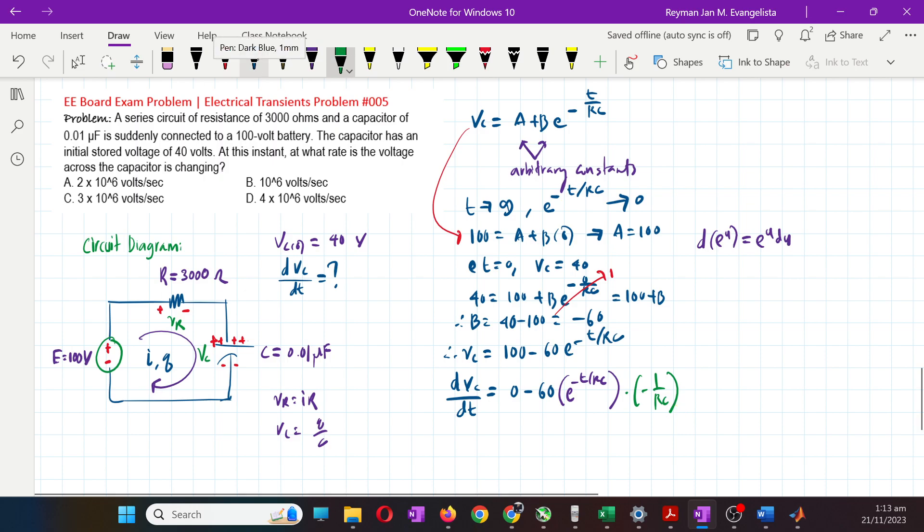Then what's the derivative of the exponent? The derivative of negative t over RC is obviously negative 1 over RC. So our dVc/dt becomes negative negative positive, so 60 over RC e raised to negative t over RC.